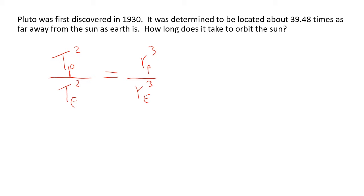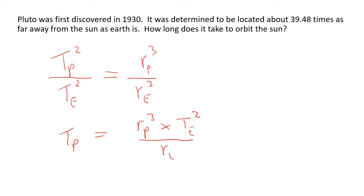Do the algebra first. Rearranging Kepler's law to solve for Pluto's orbital period gives us: Pluto's period squared equals Pluto's distance from the Sun cubed times Earth's orbital period squared, divided by Earth's distance from the Sun cubed. So Pluto's orbital period is the square root of that expression.